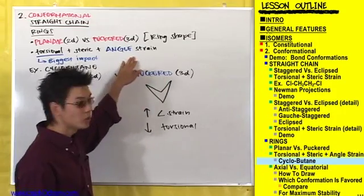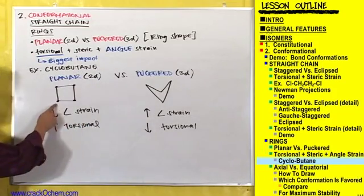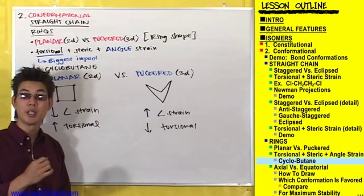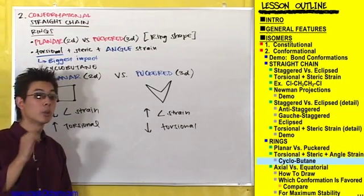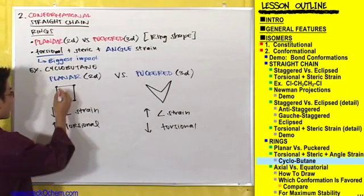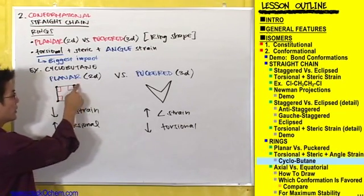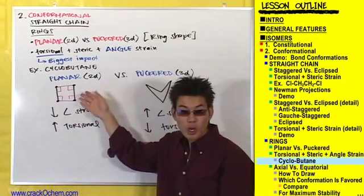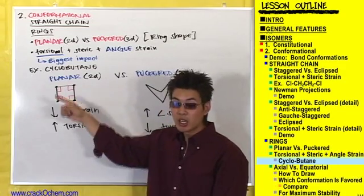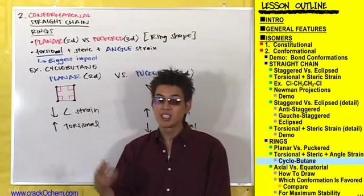Angle strain comes from atoms having bond angles that deviate from their preferred bond angles. Each carbon of this compound has four single bonds, so its hybridization is SP3, and the shape is tetrahedral with bond angles of 109.5 degrees. But each of these carbons is bonded at 90-degree right angles — they all want to be bonded at 109.5 degrees, but here they're being forced to bond at 90 degrees. Therefore this conformation has angle strain. Anytime an atom is forced to bond at a lesser or greater angle than it wants, that's considered angle strain.